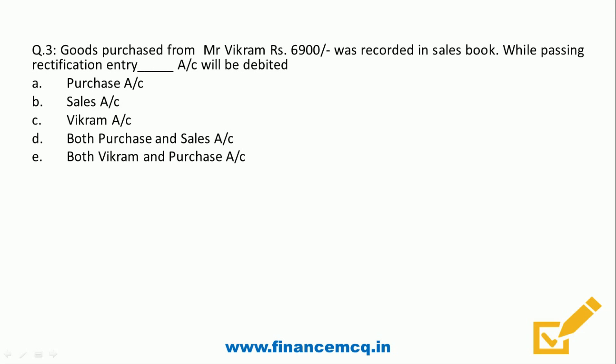Question three: goods purchased from Mr. Vikram, rupees 6,900, were recorded in the sales book. While passing the rectification entry, which account will be debited? Option A: purchase account, option B: sales, option C: Vikram account, option D: both purchase and sales account, option E: both Vikram and purchases account.